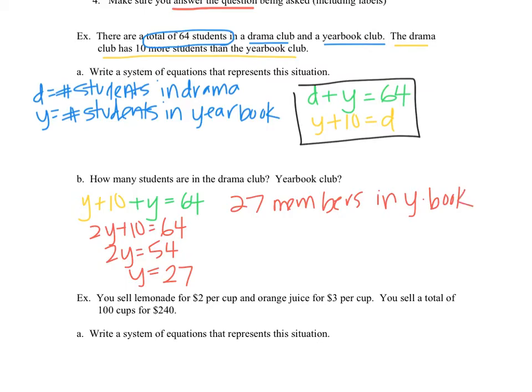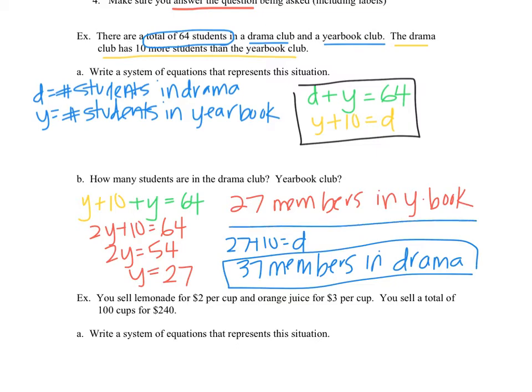I also need to figure out how many are in the drama club. So I pick whichever equation I want, whichever one looks easier, and I plug in 27. I'll just do 27 plus 10 equals D, so that's 37 members in drama. And you can double-check yourself by making sure that that equals 64, 37 plus 27. And remember, our answer is not a coordinate point. Our answer is a sentence.